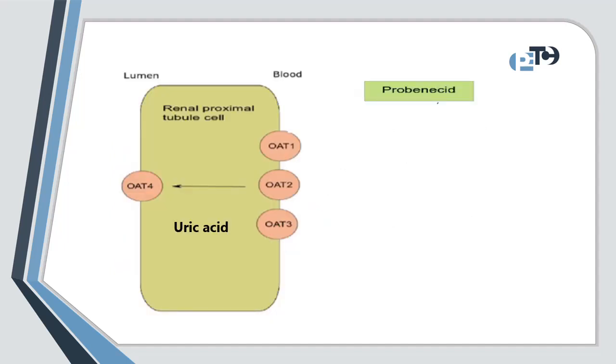Probenecid works by inhibiting the renal tubular reabsorption of urate, thus promoting the excretion of uric acid. It achieves this by blocking the organic anion transporter in the renal tubules. NSAIDs are often bound to plasma proteins and are metabolized in the liver.